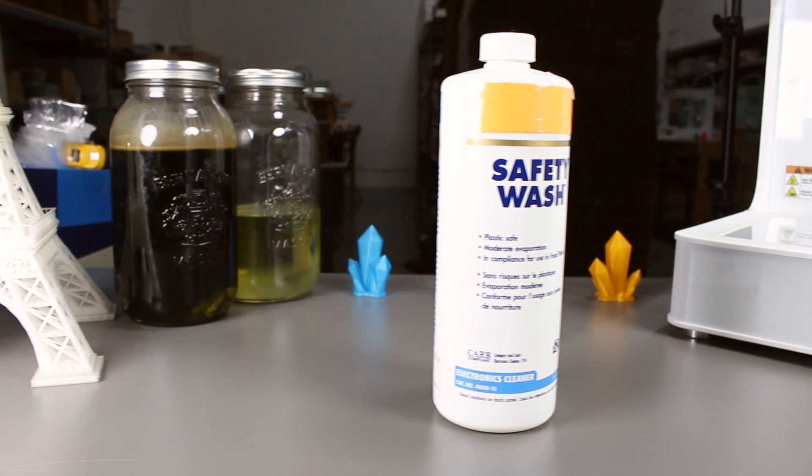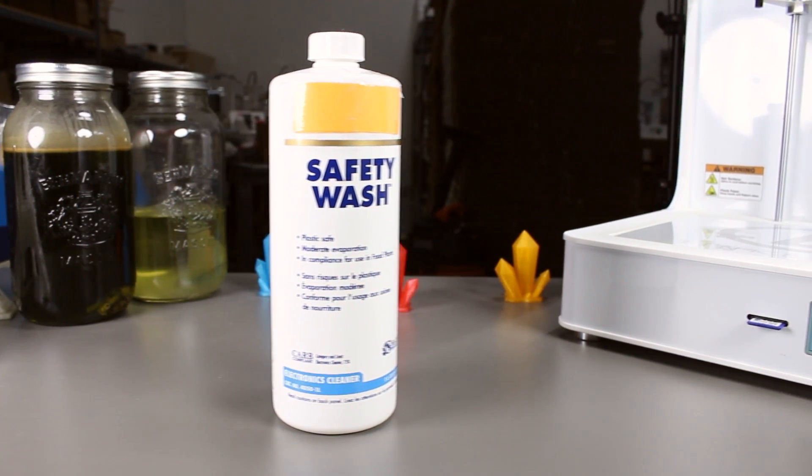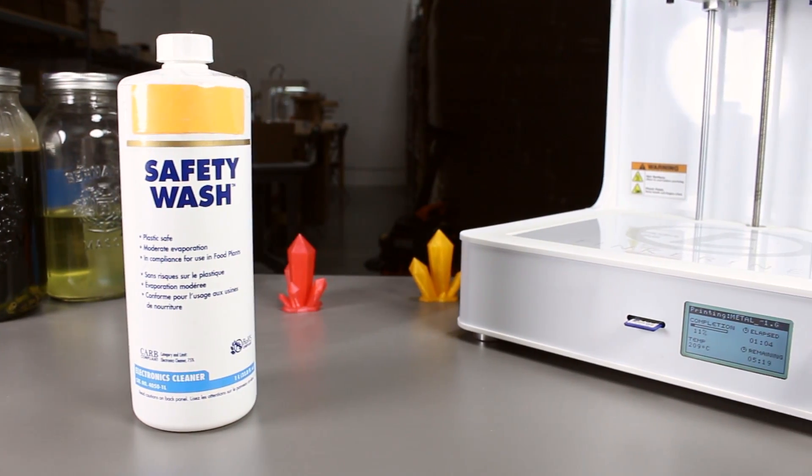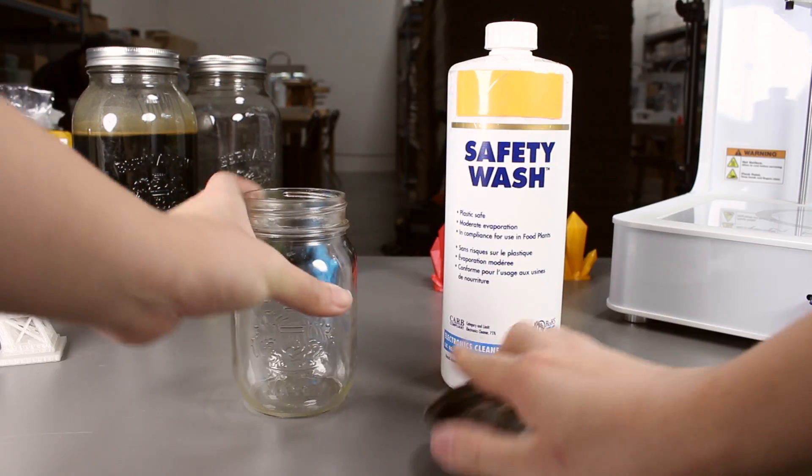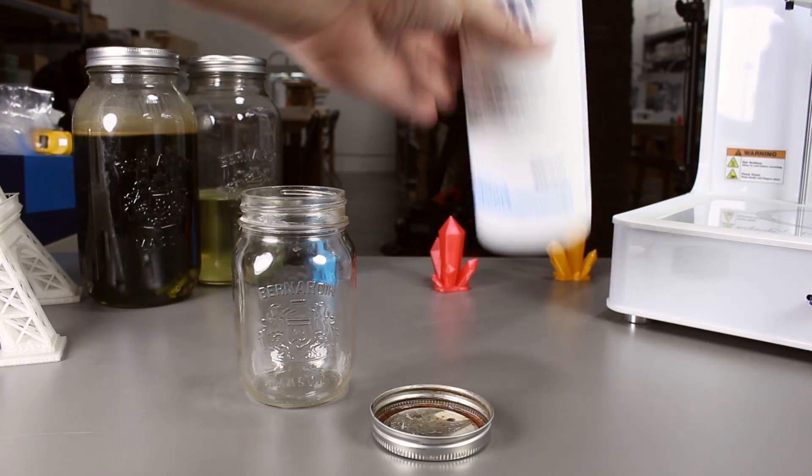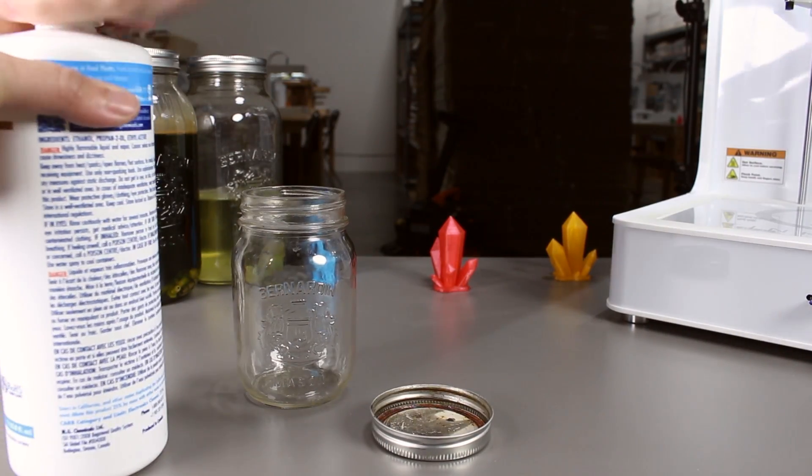We heard that ethyl acetate eats away PLAs, so it should smooth out the surface of the print when we dunk our print in it. We have a bottle of ethyl acetate mixed with isopropyl alcohol right here. I'm not too sure about the ratio between the two, but let's see if it works.